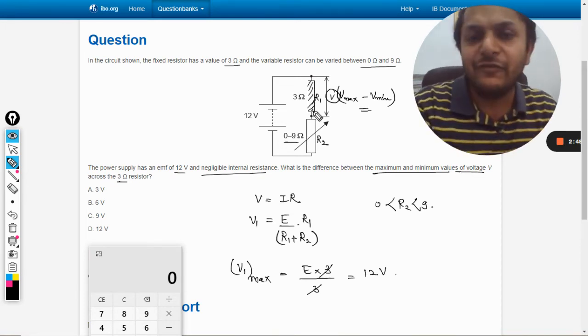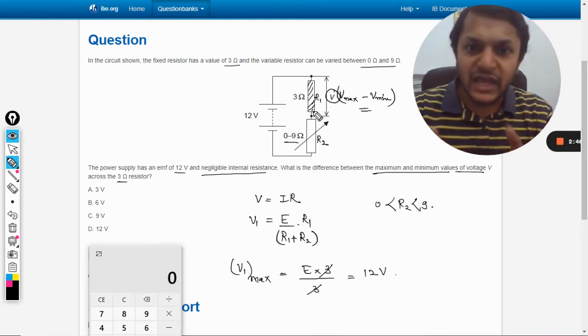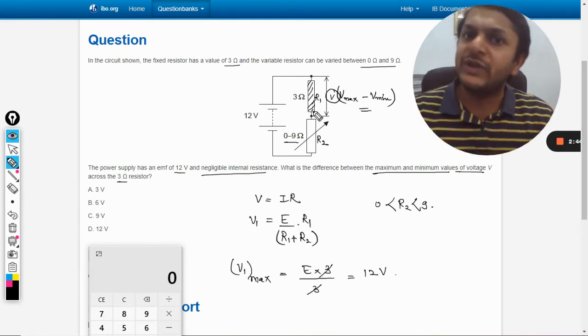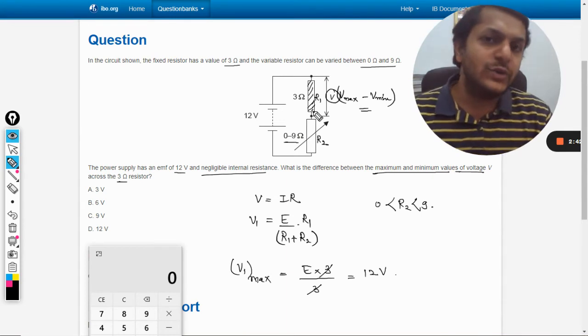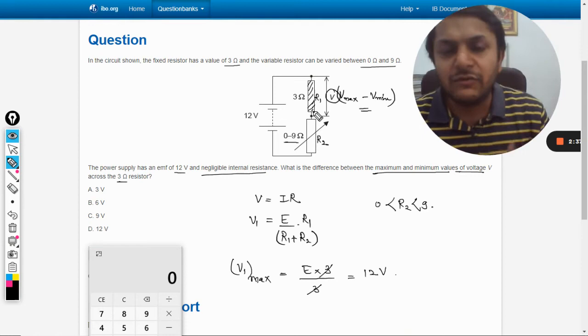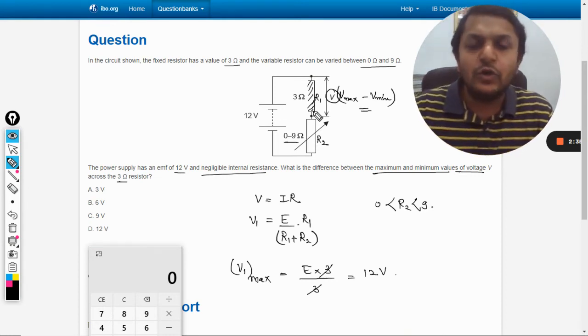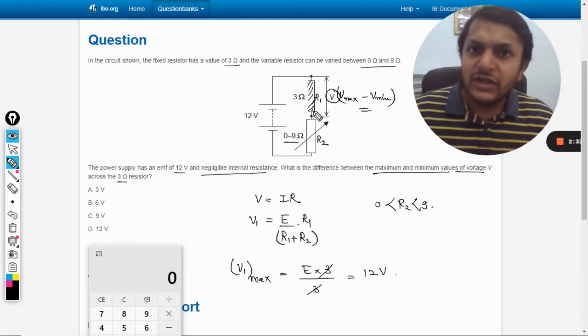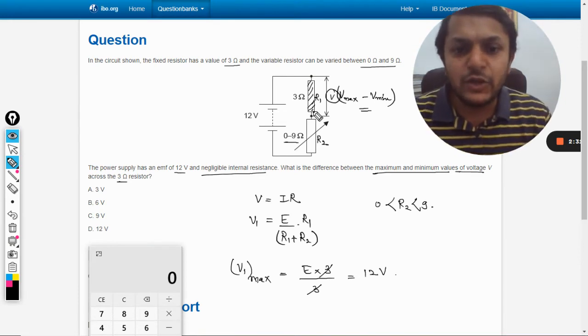So maximum, the voltage drop across this R1 can be equal to 12 volts, that is the EMF of the battery. If the value of R2 becomes 0, obviously there will be no potential drop across R2. V1 plus V2 has to be equal to 12, so if V2 is 0, V1 will be equal to 12.